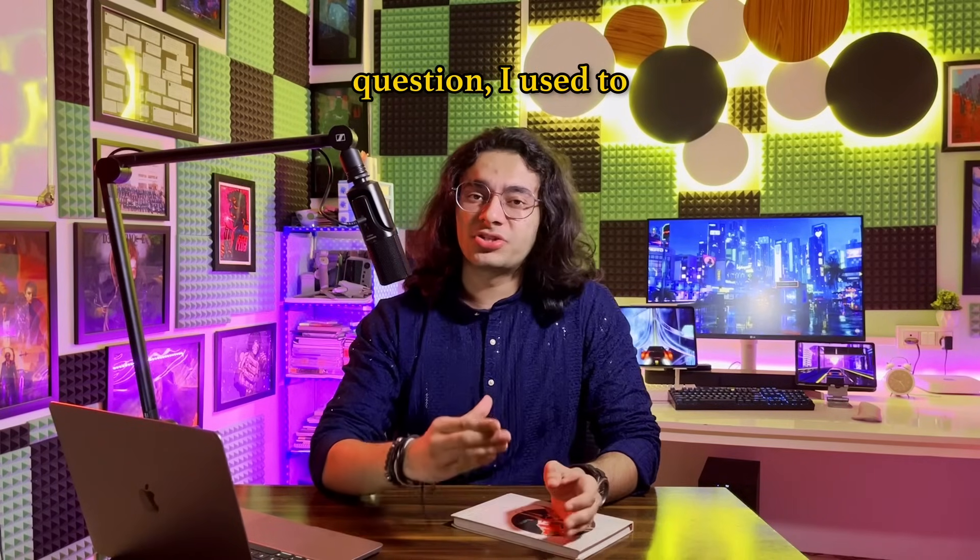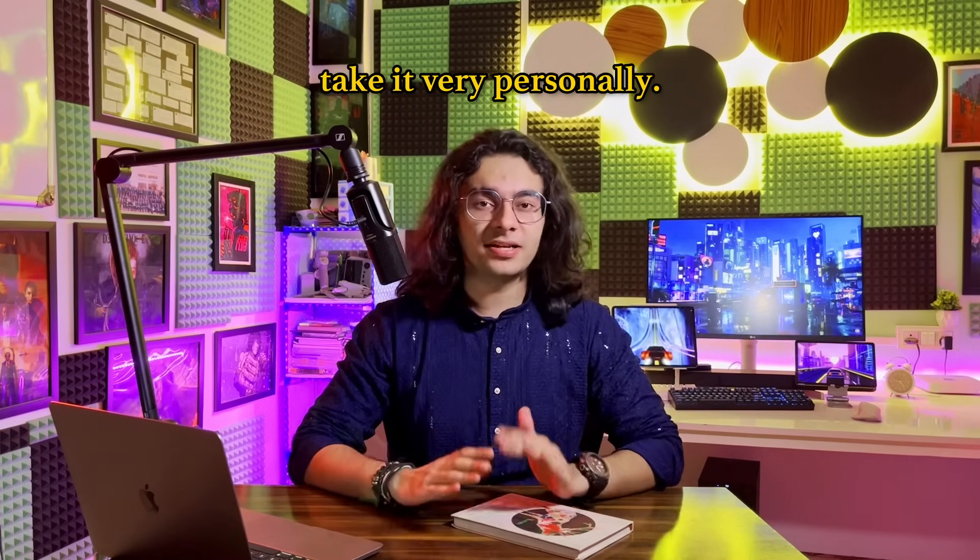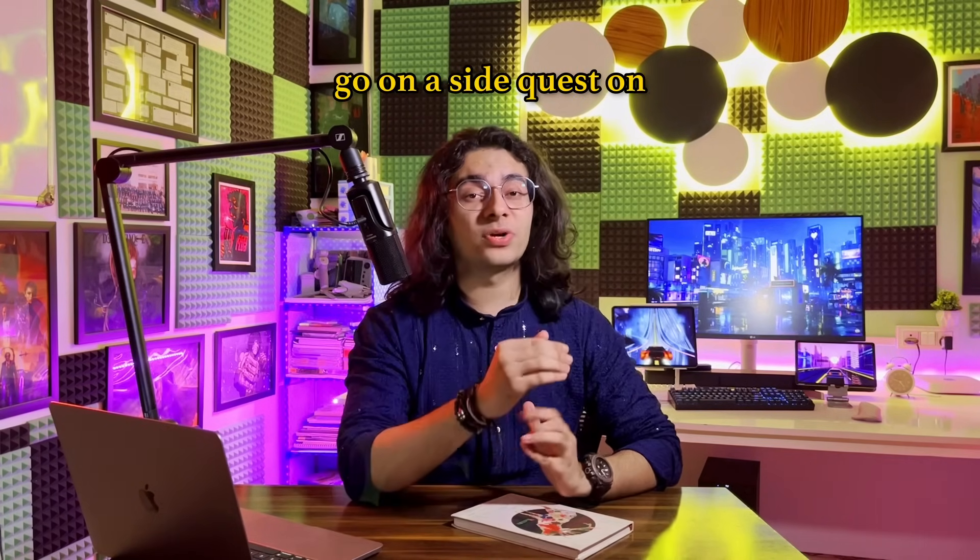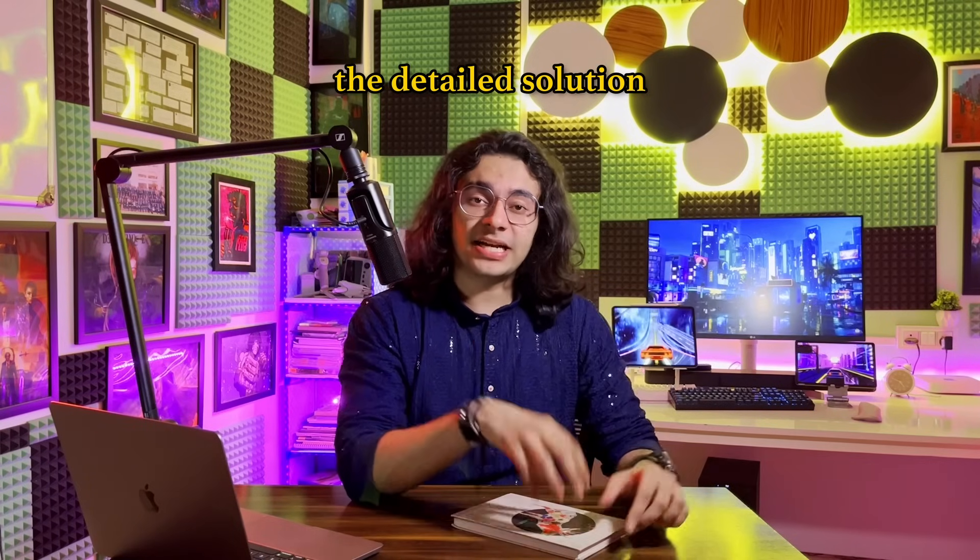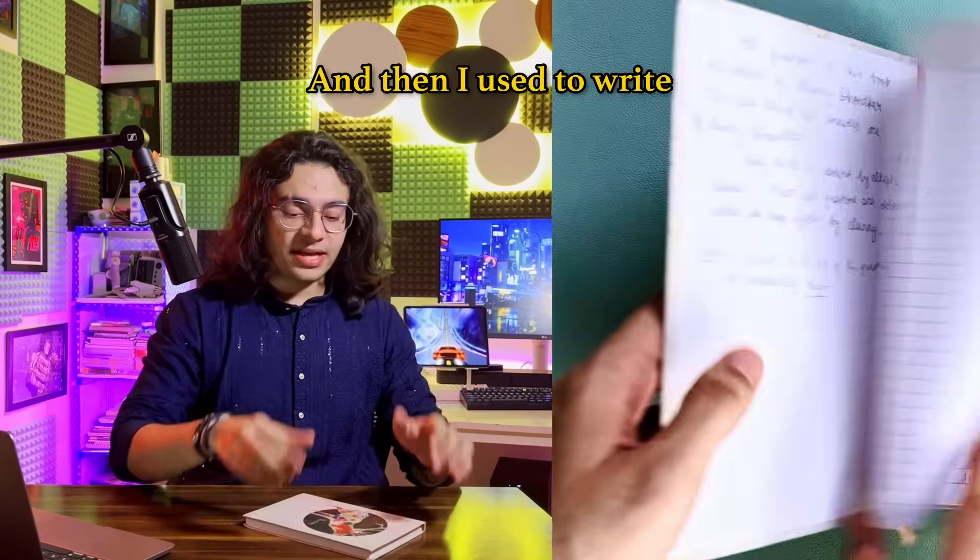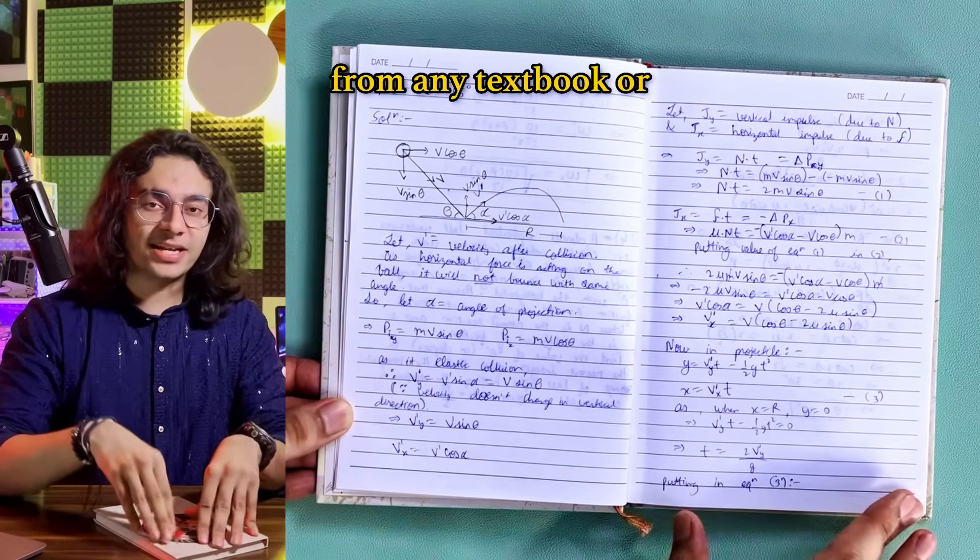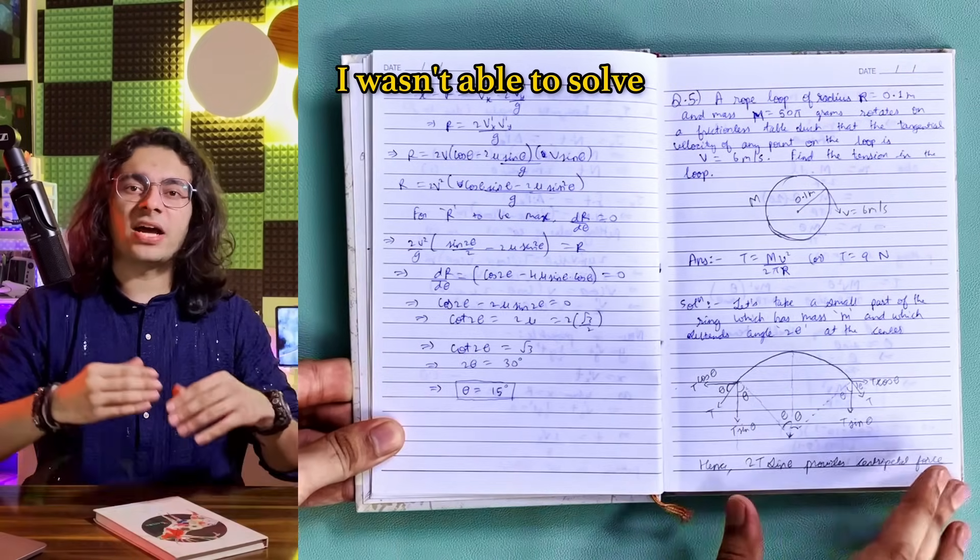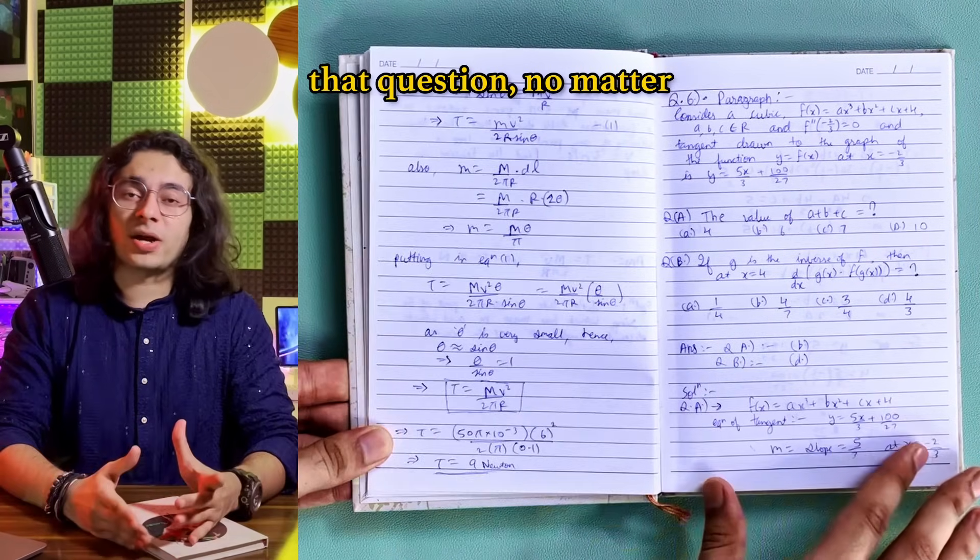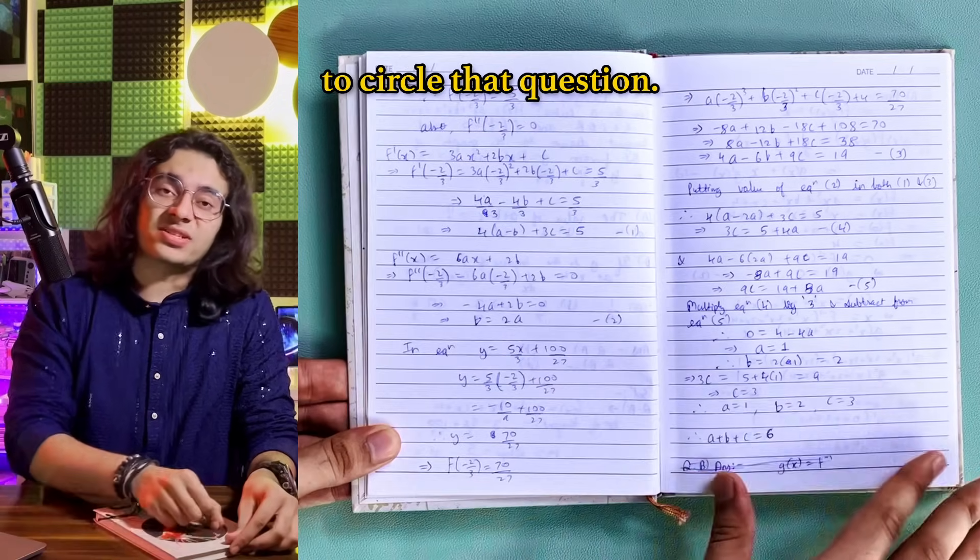If I wasn't able to solve a particular question, I used to take it very personally and then I used to go on a side quest on the internet to find the detailed solution to that question. And then I used to write the detailed solution to that question in this book. While solving questions from any textbook or any question paper, if I wasn't able to solve that question no matter how hard I try it, I used to circle that question.